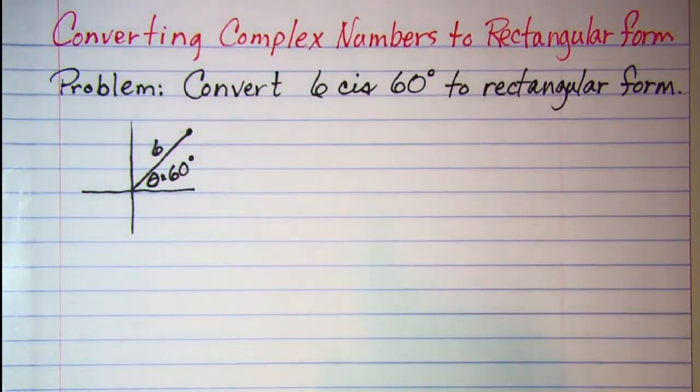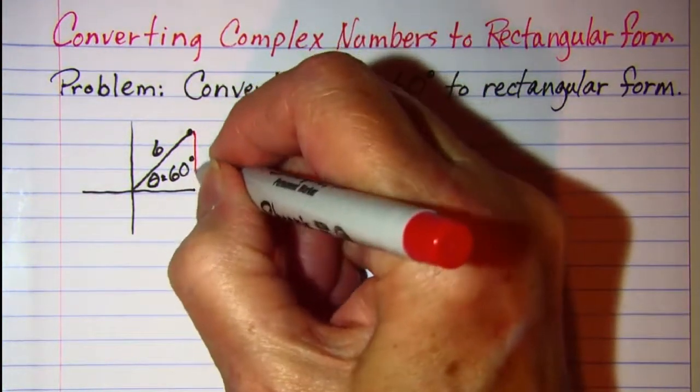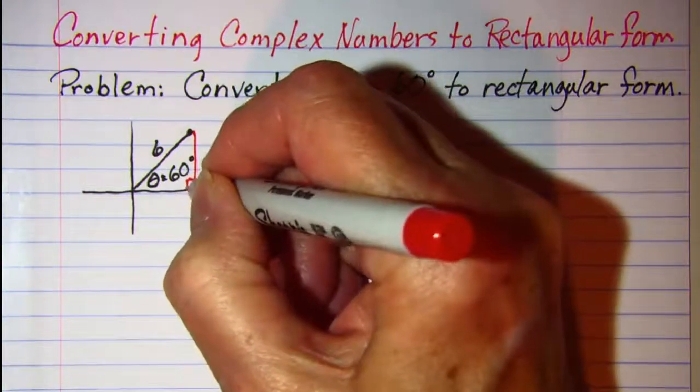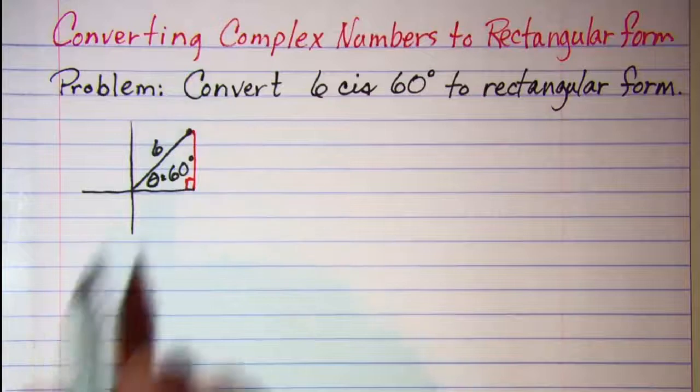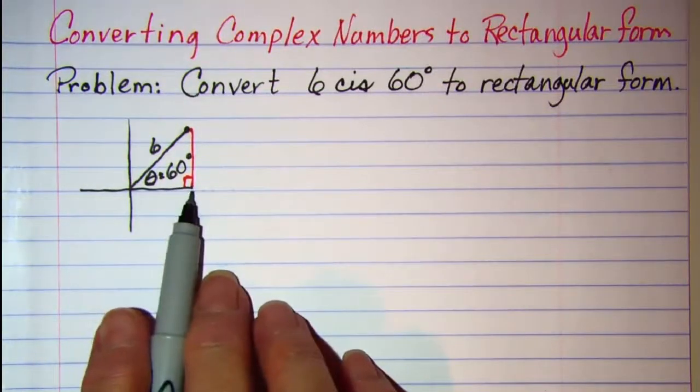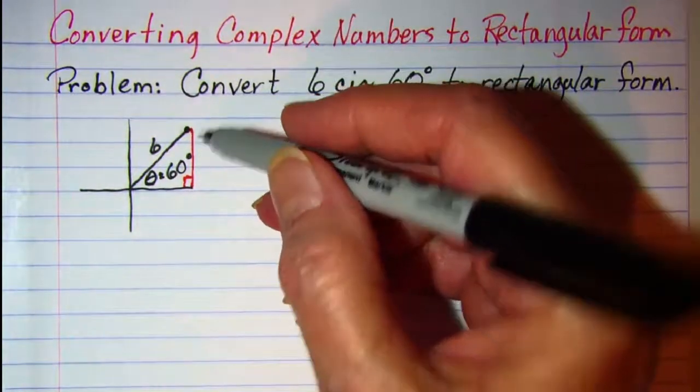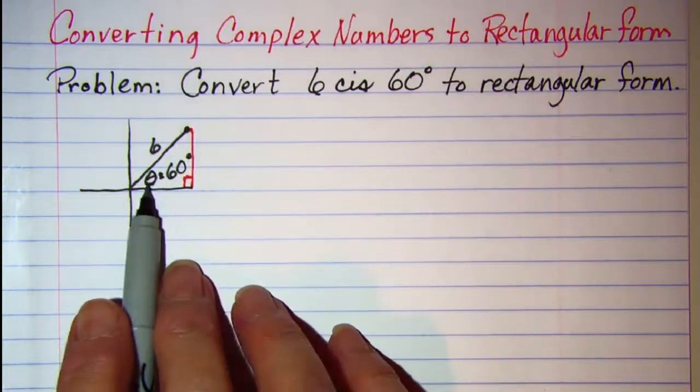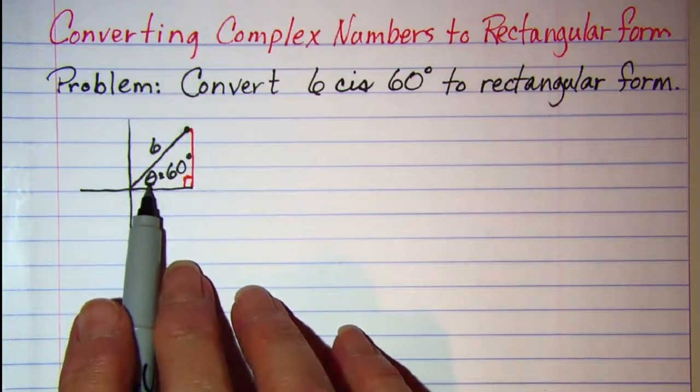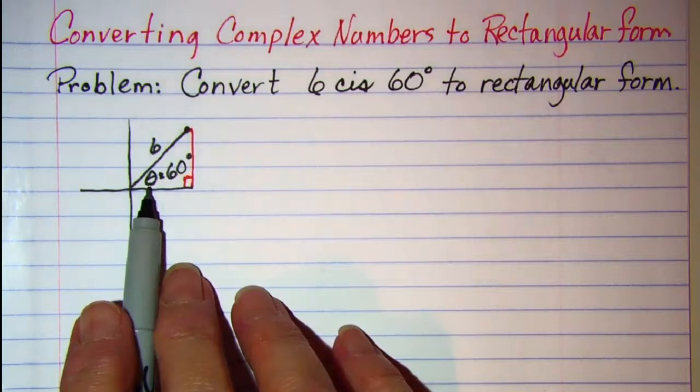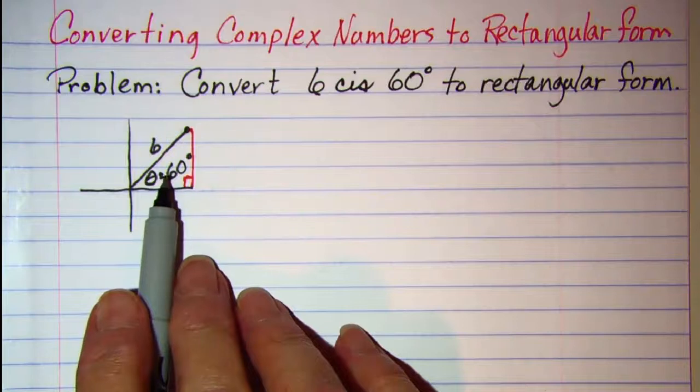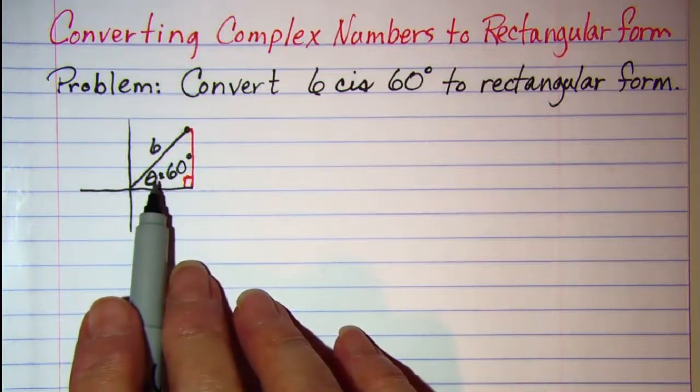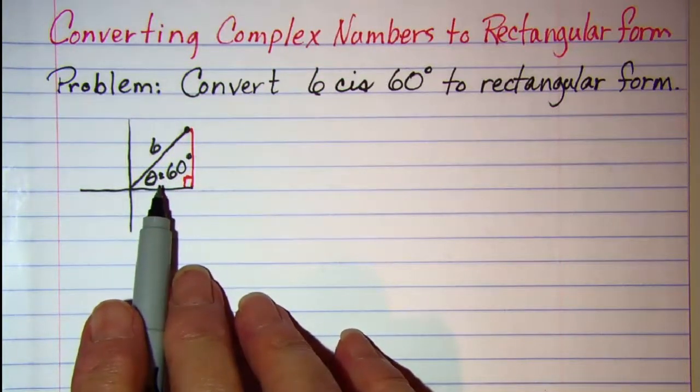So to change to rectangular form we need to find the horizontal component and the vertical component. Now we know that 60 is one of our special triangles so we can apply that knowledge. We could also do our right triangle trig.